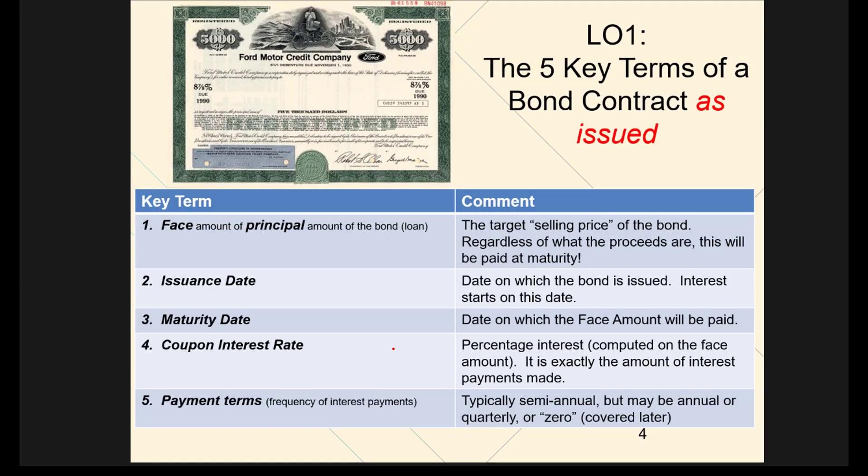Let's look at some of the basic provisions of a bond contract. This is a theoretical example of Ford Motor Company. On the face of the bond you'll see certain things. The principal amount — sometimes called the principal amount but normally just called face — and in this case it's $5,000. This is the target selling price of the bond.